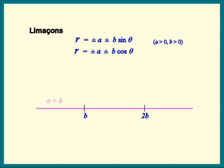If A is less than B, the limaçon has an inner loop. If A falls between B and 2B, it's dimpled. Once A gets to 2B and beyond, it becomes convex.